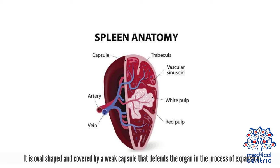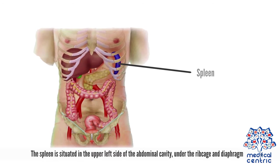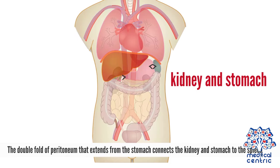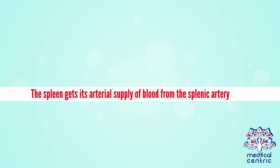The spleen is oval-shaped and covered by a weak capsule that defends the organ in the process of expansion. It is situated in the upper left side of the abdominal cavity, under the ribcage and diaphragm. The double fold of peritoneum that extends from the stomach connects the kidney and stomach to the spleen. The spleen gets its arterial supply of blood from the splenic artery.